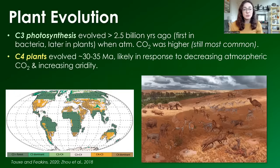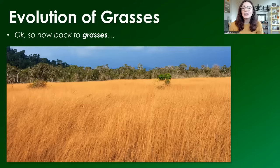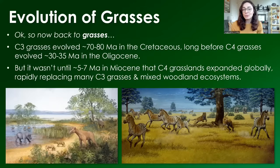C4 plants didn't evolve until around 30 to 35 million years ago, likely in response to decreasing atmospheric CO2 and increasing aridity. CAM plants likely originated sometime in between, but still relatively recent compared to C3 photosynthesis, coming about around 100 million years ago, likely in response to water stress in super arid environments. But now let's get back to grasses. There are C3 grasses, which evolved around 70 to 80 million years ago during the Cretaceous period.